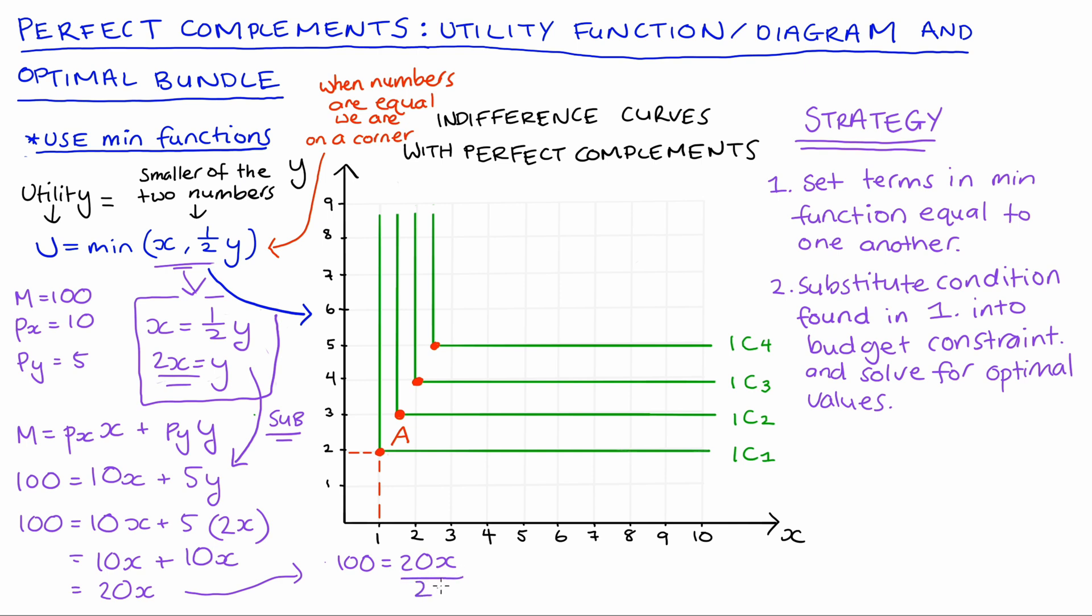We can then divide both sides by 20 so 100 over 20 is 5, so x star, the optimal consumption of x, is equal to 5. We can then put that x star back into our condition y equals 2x. You could also put it back into the budget constraint but I'll just put it back into our condition. So y star, our optimal value, will be equal to 2 times x evaluated at the optimal value of x which is 5, so 2 times 5 is 10 and that's y star.